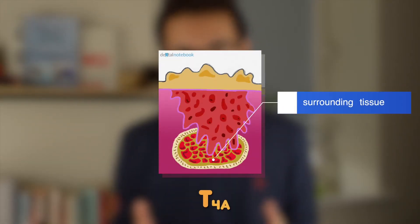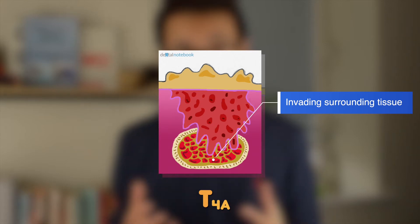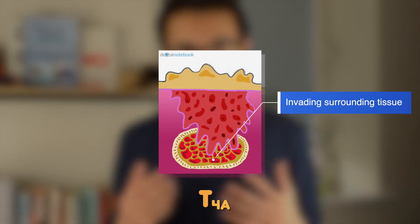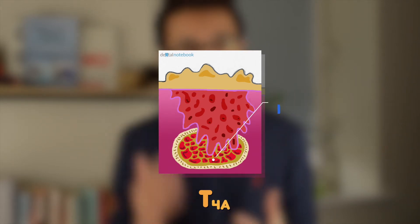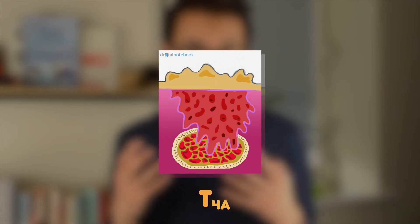And then we have T4. T4 is essentially a moderately or very advanced cancer. In the oral cavity, we have T4a, which indicates a tumour that has invaded into surrounding tissues — for example, it may have spread into the mandible or into the sinuses. We also have T4b, where the tumour has spread even further into the muscles of the face or alternatively to the skull base, and it could also be surrounding vital arteries. This essentially indicates a very advanced cancer.